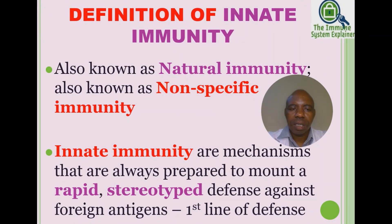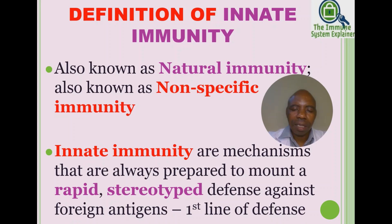Innate immunity is also known as natural immunity or non-specific immunity — it has three names. The definition is that innate immunity refers to mechanisms that are always prepared to mount a rapid, stereotyped defense against foreign antigens. These mechanisms are referred to as the first line of defense.